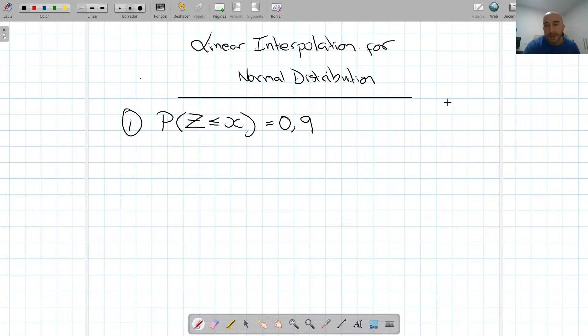So basically what we're being told is that in our normal distribution, if this is our variable, we know that all this probability is 0.9.